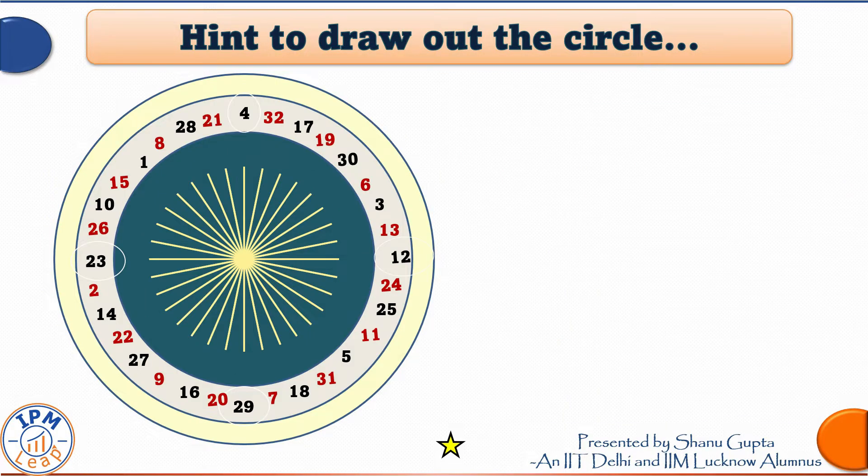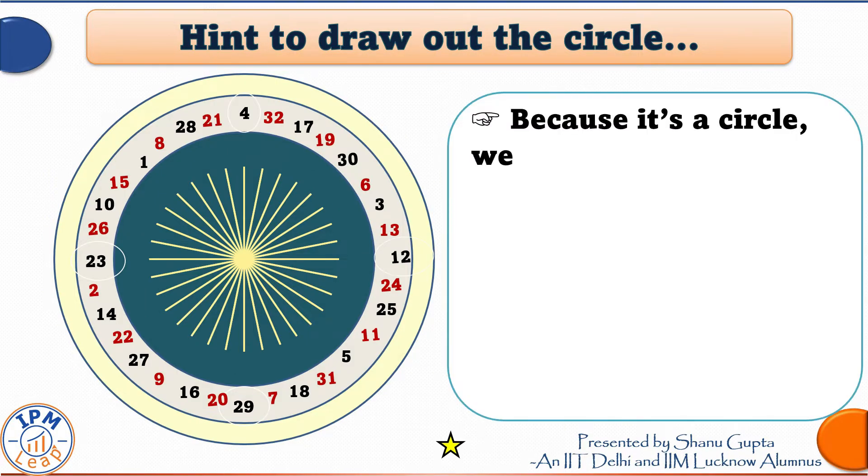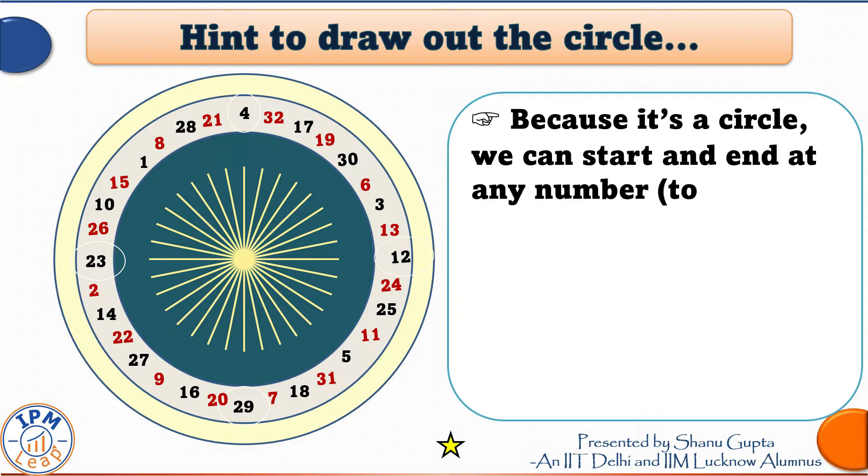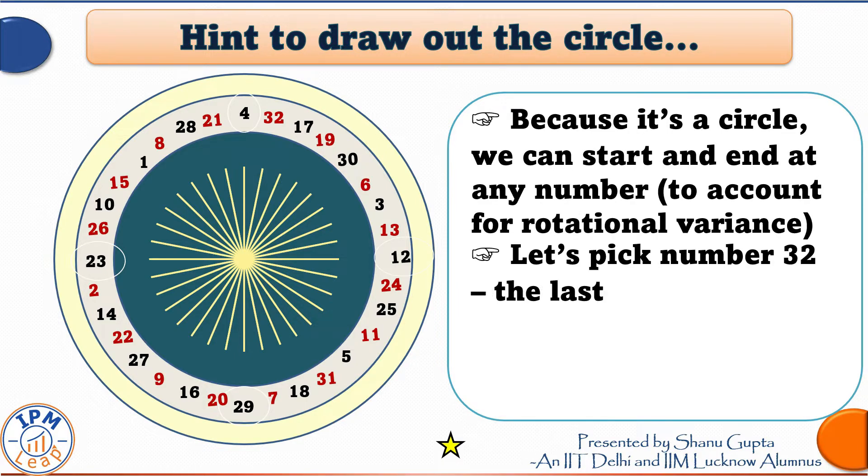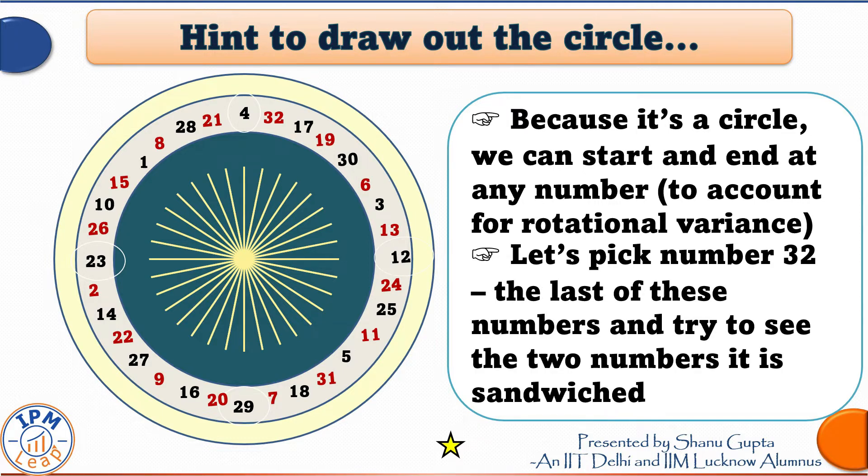And because the arrangement of these 32 numbers is around a circle, we can start and end at any number to account for rotational variance. So let us pick the number, say the last of these numbers which is 32 and try to see the two numbers that it is sandwiched between.